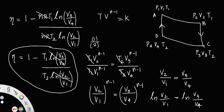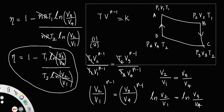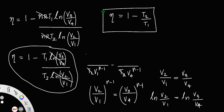Therefore, the final expression for efficiency is: η = 1 − T2/T1, where T2 is the temperature of the sink and T1 is the temperature of the source. T1 is the constant temperature at isothermal expansion and T2 is the constant temperature at isothermal compression.